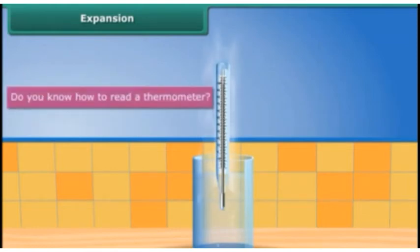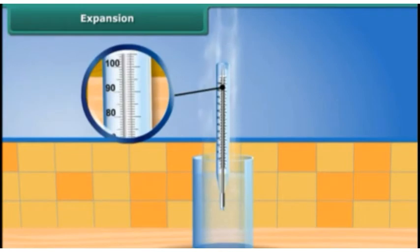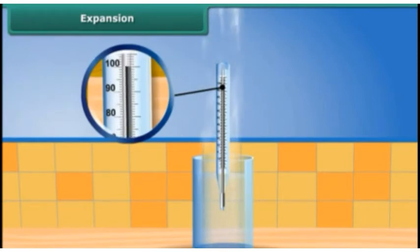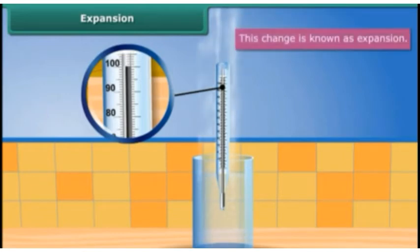Do you know how to read a thermometer? The thermometer shows the temperature when the mercury inside it expands. Since there is a change in the state of the mercury, the thermometer is able to display temperature. This change is known as expansion.